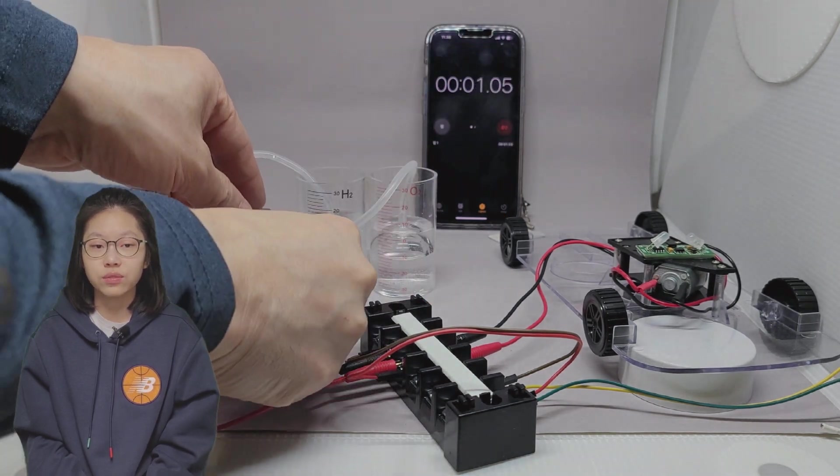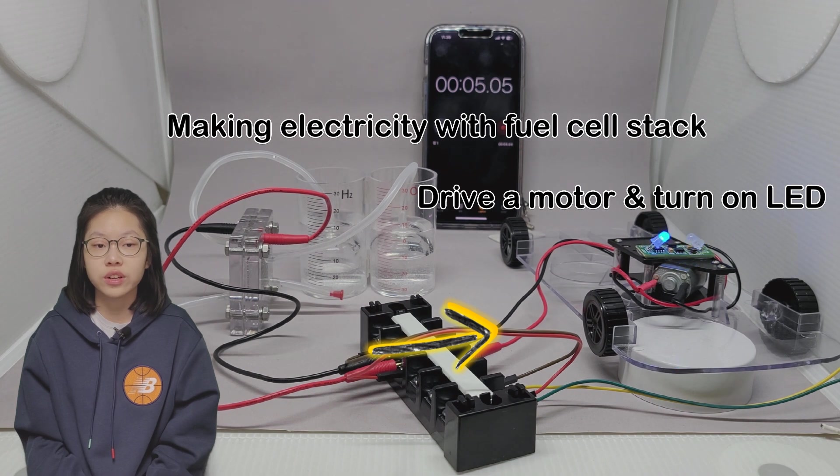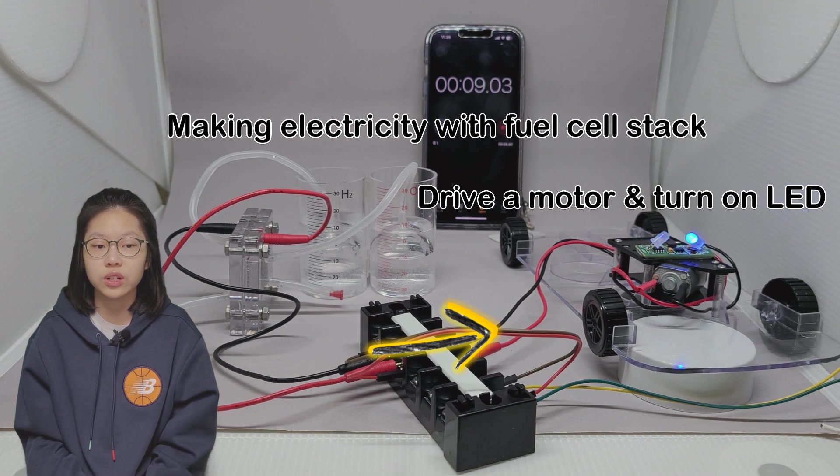Now I will connect the fuel cell to the car kit. It uses hydrogen and oxygen to generate electricity and uses the electricity to power the car's motor and LEDs.